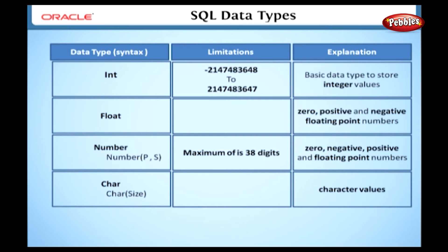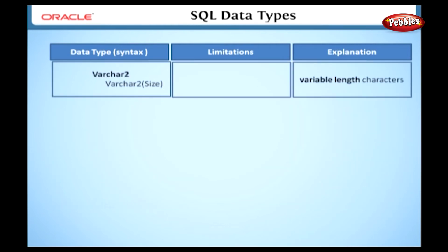Character. Here we can store the character values. The size specifies the number of characters. For example, char 10 specifies 10 characters. In this type, we can store up to 2,000 bytes.